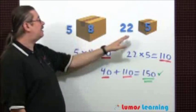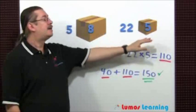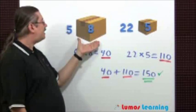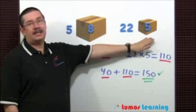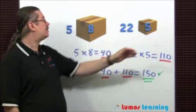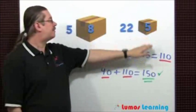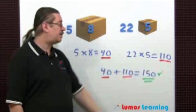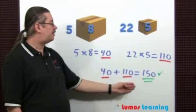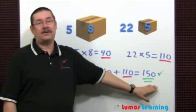Each large package contains 8 decorations. Each small one contains 5. To find the answer, just multiply: 5 times 8 gives you 40, and 22 times 5 gives you 110. Then just add up 40 plus 110, which gives us 150 decorations that Susan needed.